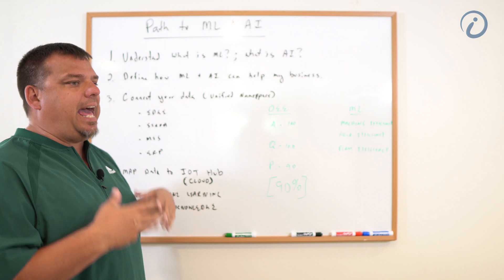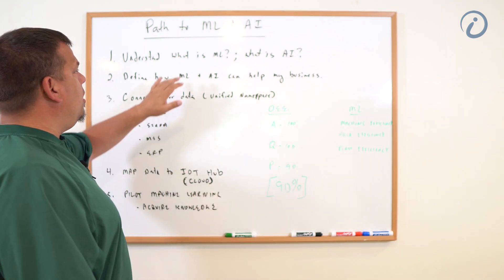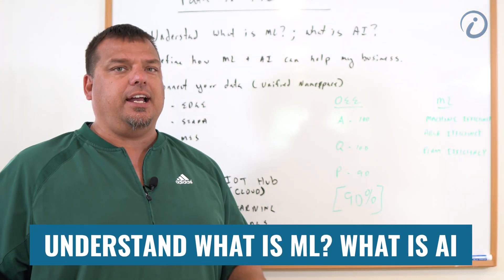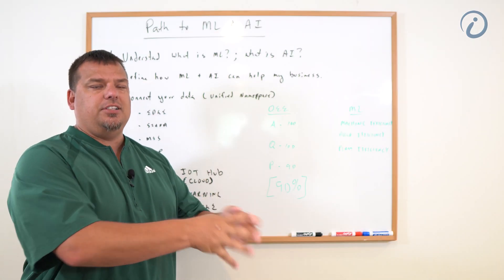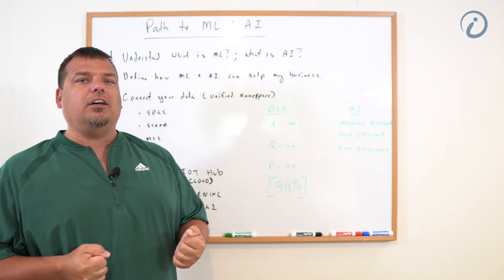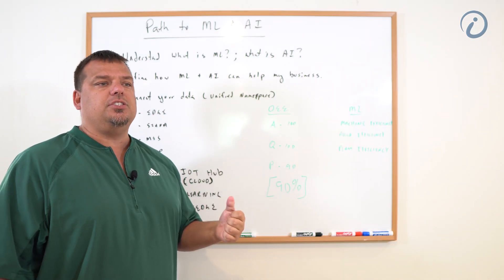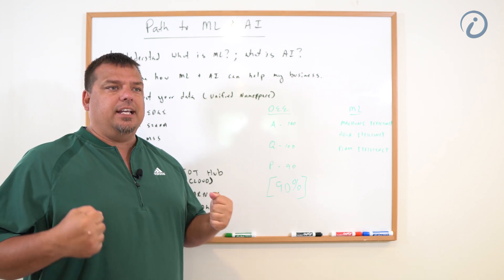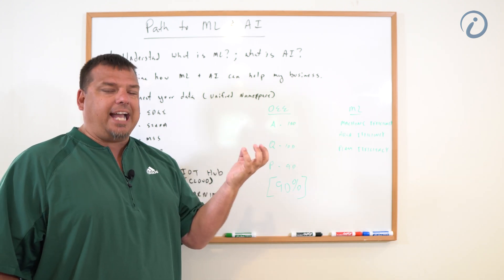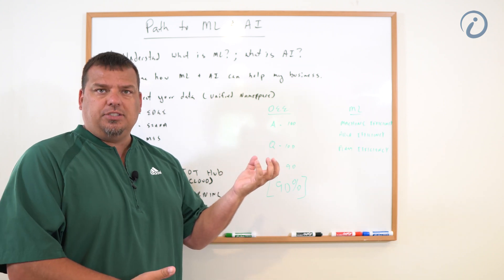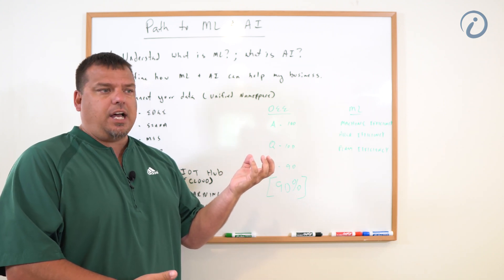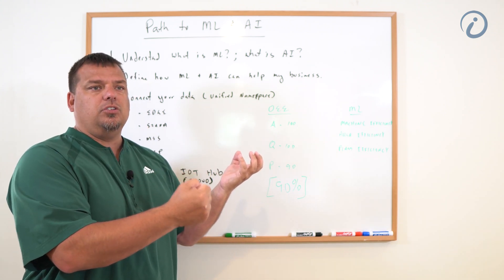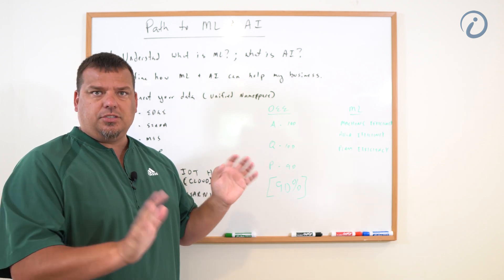The first step in the path to machine learning and AI is we have to understand what machine learning and AI are. Machine learning is the acquisition of knowledge and artificial intelligence is the acquisition of wisdom. Machine learning is concerned with accurately knowing what your business is doing in real time, and artificial intelligence is more concerned with producing optimal decisions.